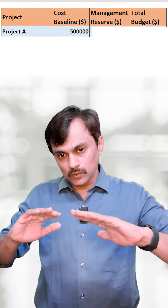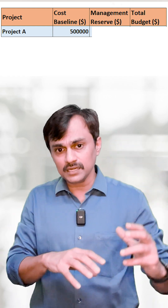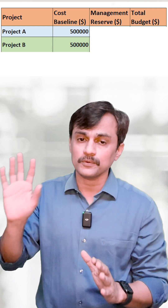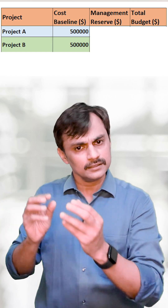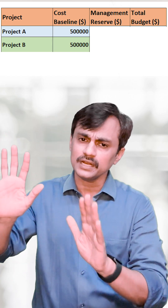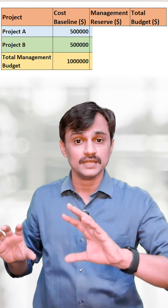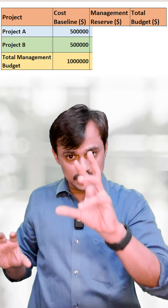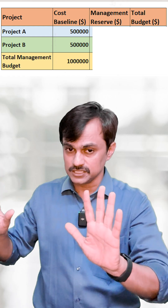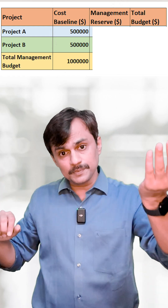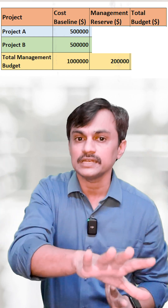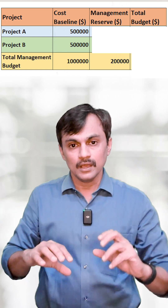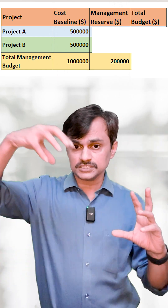Now my management might be running two projects. The other project is also asking for $500,000, and Project B also got approval — that is also a cost baseline. So my management has invested $500K plus $500K, which is a $1 million investment already done in their budget for one year. They also have $200,000 left over.